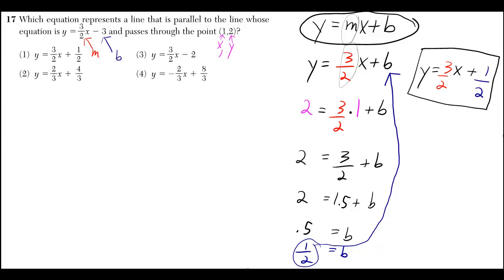So we can use the fact that it has to pass through the point (1, 2), which means that when we plug in 1 for x and 2 for y, we'll figure out what the value of b would have to be.